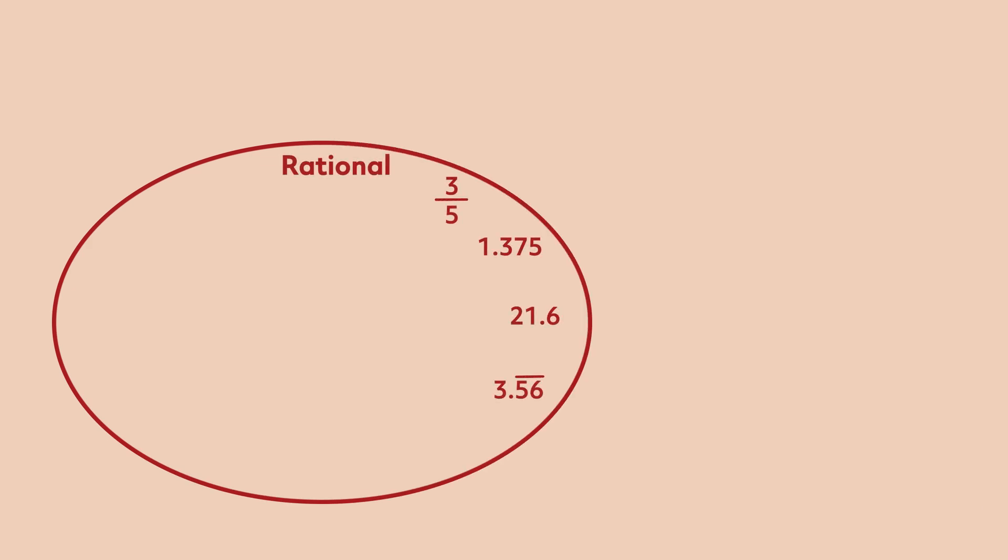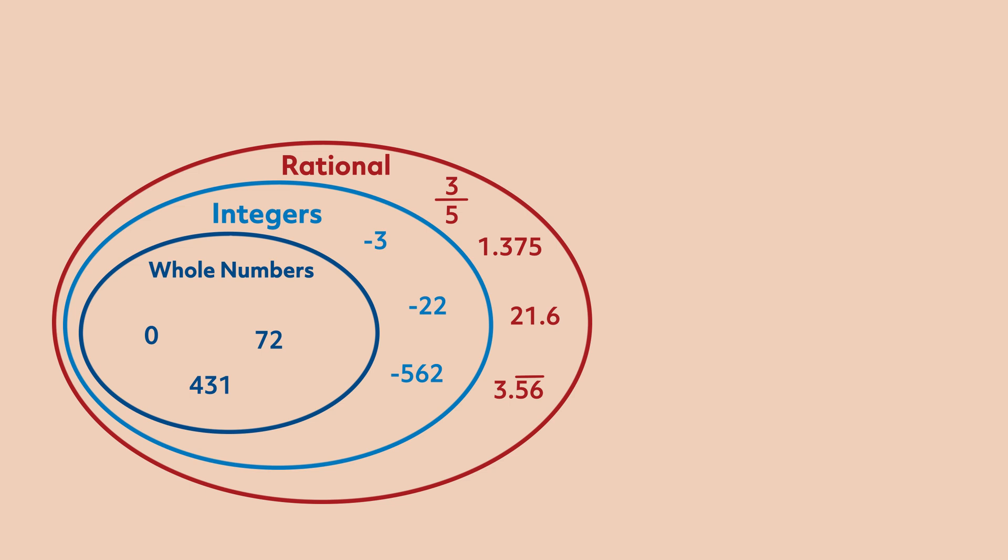This diagram clearly shows that there is no overlap between the rational and irrational number sets. Another way of thinking about it is that irrational numbers are those that cannot be written as a fraction.